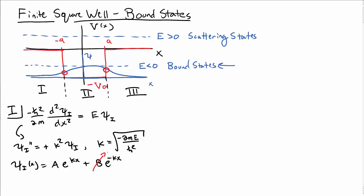Solutions look like exponentials, and I know that the coefficient B must be equal to zero because that term blows up as x goes to minus infinity, and I want a wave function that's normalizable.